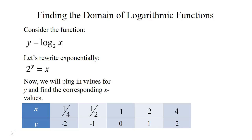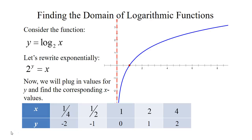Now go ahead and plot those points on the grid. Notice that I drew a vertical asymptote at x equals 0. That's because 2 to the y can never equal 0 — no matter what positive or negative value you plug in, it's never going to give you 0 for x. In the same way, you can't get a negative output because your base is positive, so x can never be negative. That means we have a domain from 0 to infinity, and the range for this graph is all real numbers.